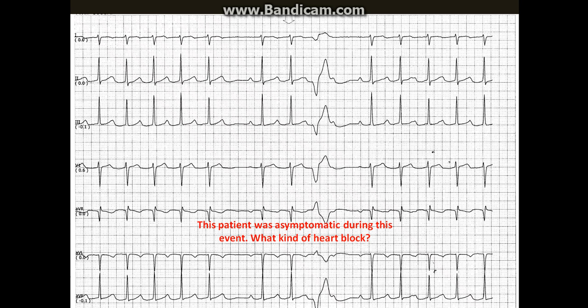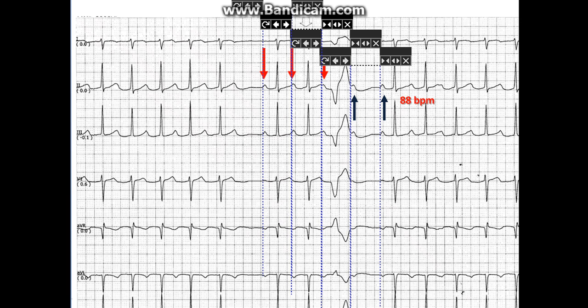First, I look to search for the P waves. I use the P-to-P interval to march out the P waves, which are marked with blue arrows. From there we can march backwards or forward, and the atrial rate is about 88 beats per minute. It is obvious that some of the P waves are buried in the T waves or are hidden from view.